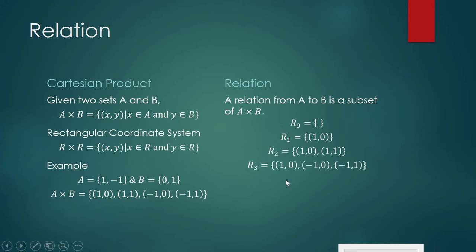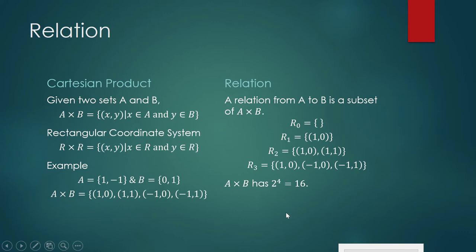How many relations are possible for A cross B? To know that, you must know how many subsets A cross B has. If the cardinal number of your set is four — it has four elements — then your set has two to the fourth subsets, which is sixteen. So those shown are just a few of the relations in your A cross B.